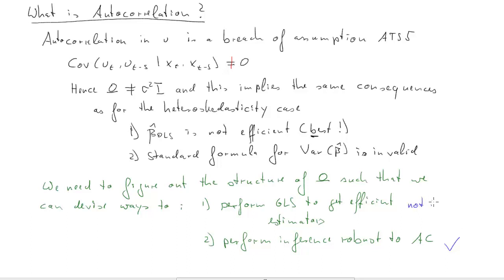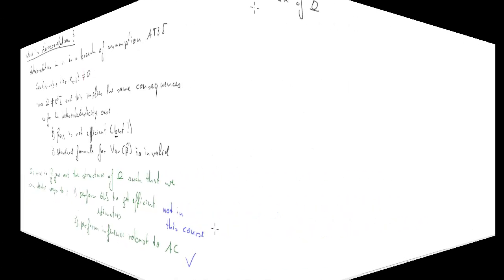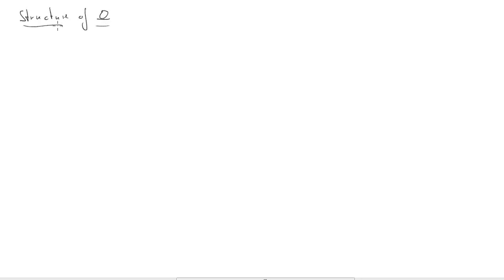What we need to do is figure out the structure of this omega such that we can devise ways to tackle these two issues. Devise a way to perform GLS to get efficient estimators of beta, and secondly, demonstrate how we can perform robust inference, or inference that is robust to autocorrelation. In this clip, we'll deal with robust inference, but we will not discuss how to do GLS. For autocorrelation, this is quite complicated and very specific to special cases.